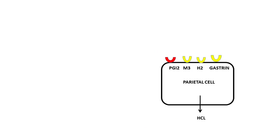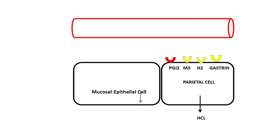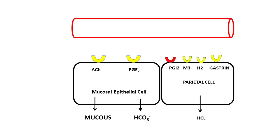Now we move on to the mucosal epithelial cell. The mucosal epithelial cell is responsible for the secretion of bicarbonate as well as mucus. It is under the influence of two receptors: a receptor for acetylcholine and a receptor for PGE2. When these receptors are stimulated, it results in three events: increased production of bicarbonate, an increase in mucus production, and an increased mucosal blood flow.